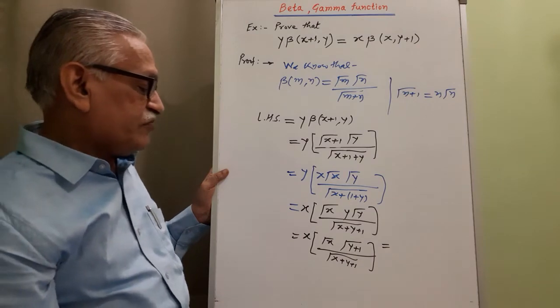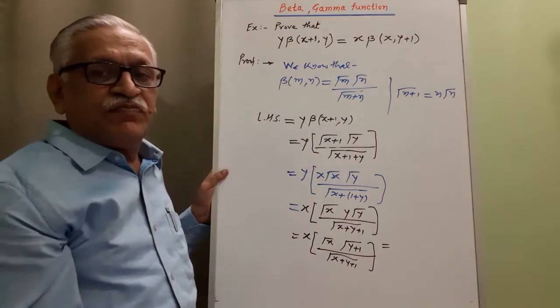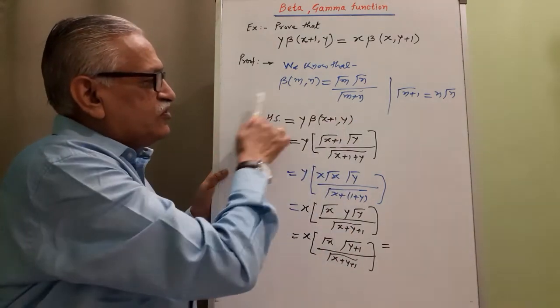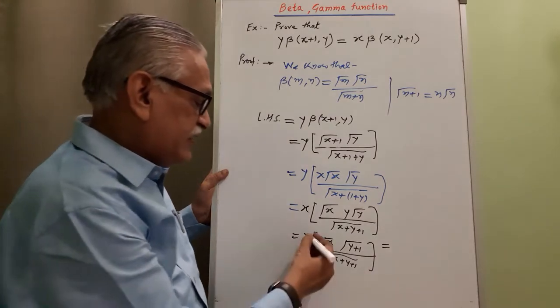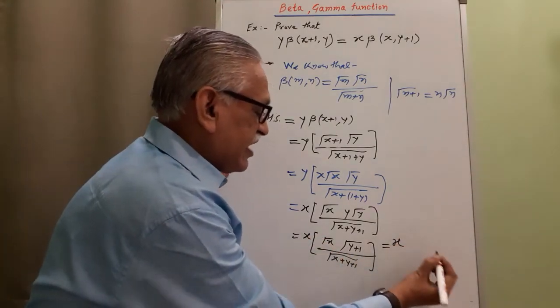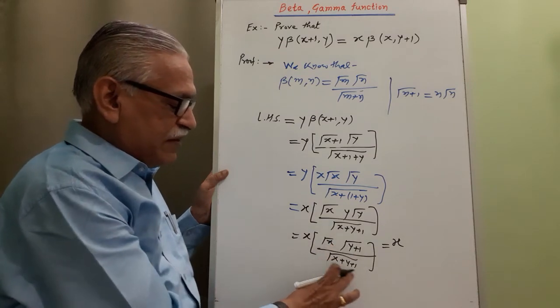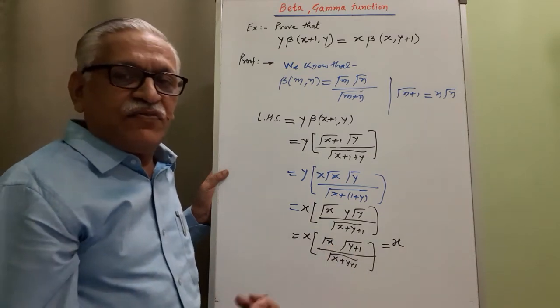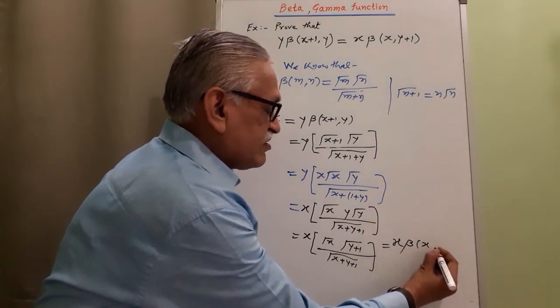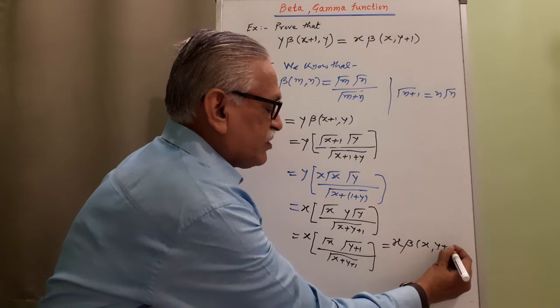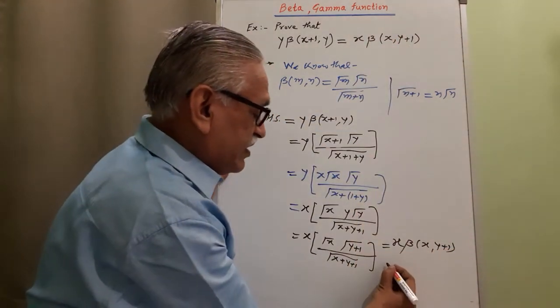And that is equals to, we take the help of this property relation in reverse way also. Gamma M, gamma N divided by gamma M plus N is beta of M, N. And therefore, this is X as it is, no change. Gamma M, gamma N divided by gamma M plus N is beta of M, N. And therefore, it is beta of X comma Y plus 1. And that is nothing but the right-hand side of that equation.